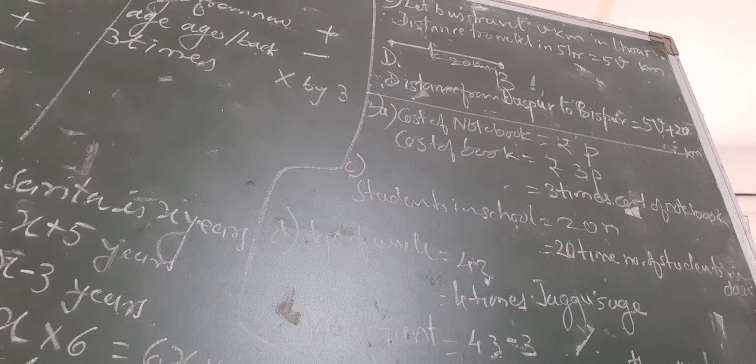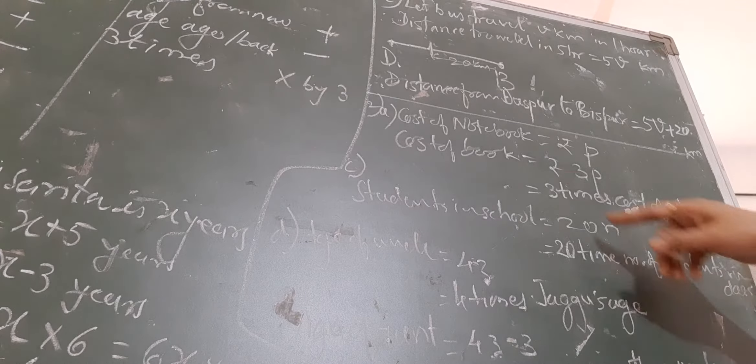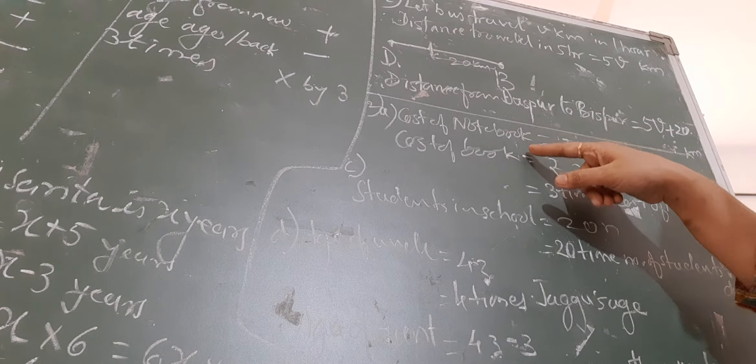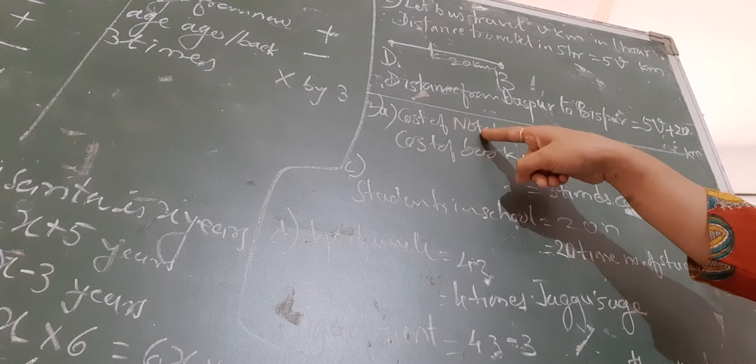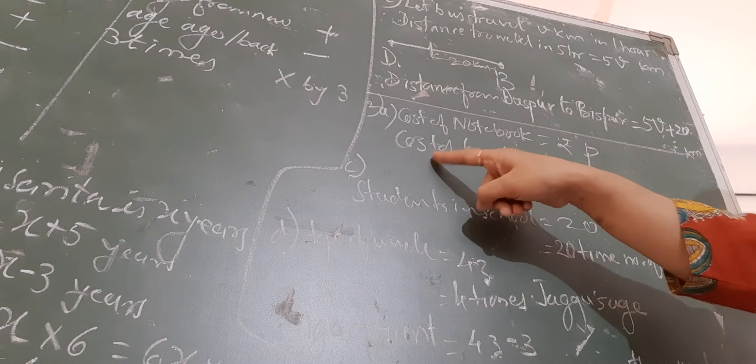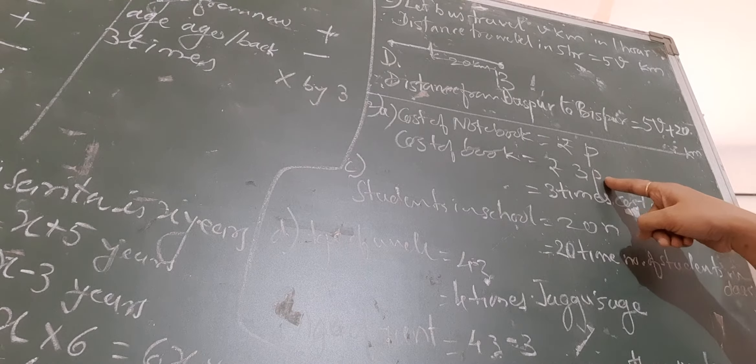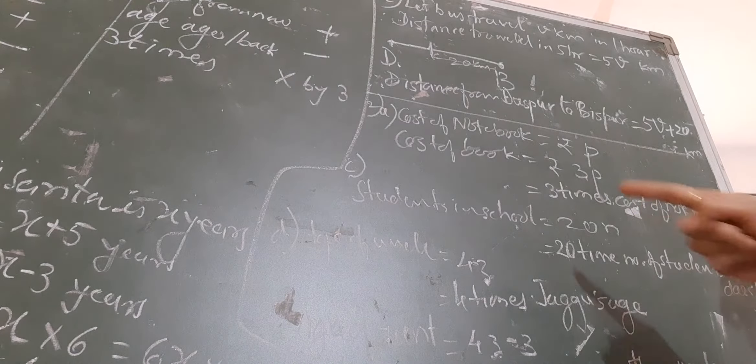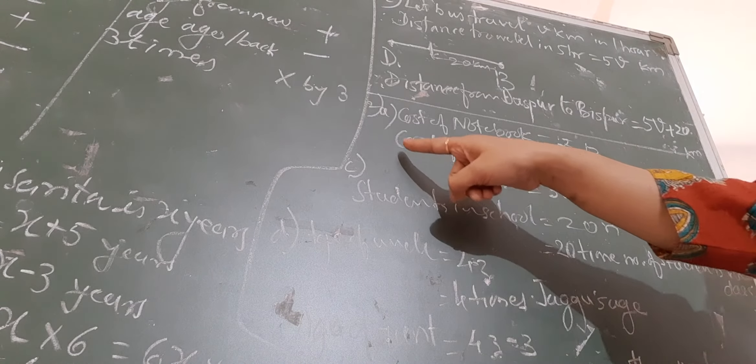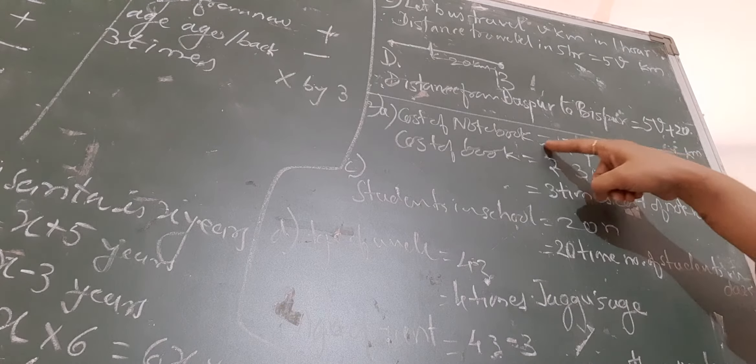Now, in the second question, it is asked to write down the statements. It is given that the cost of notebook is rupees P and cost of book is given 3P. 3P means 3 times P. P is the cost of notebook, and hence we can write down that cost of book is equal to 3 times the cost of notebook.